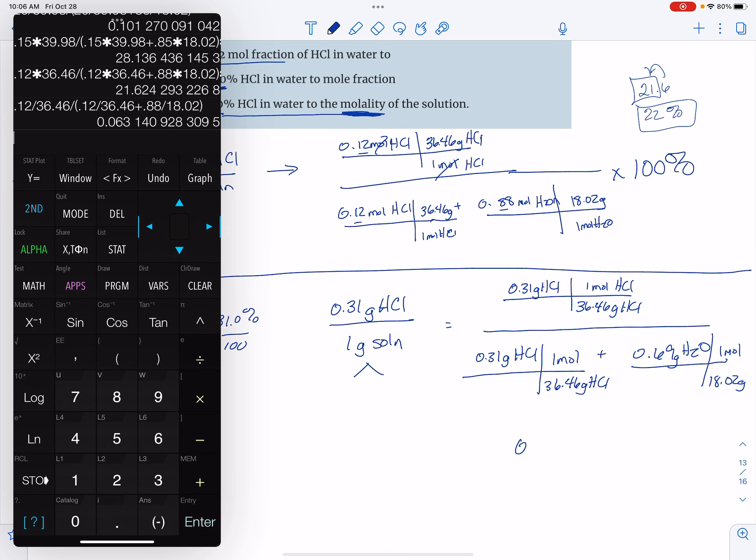So that tells me that my mole fraction is 0.063 with two sig figs, and it's unitless because it's a mole fraction.